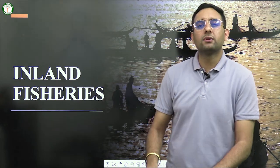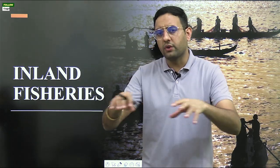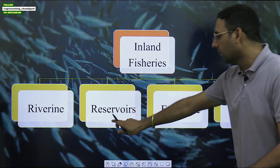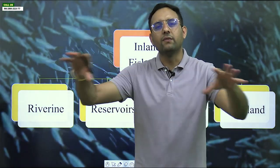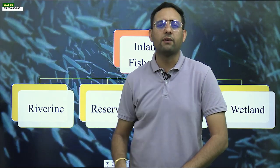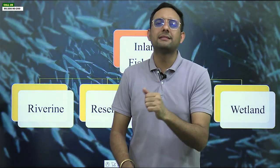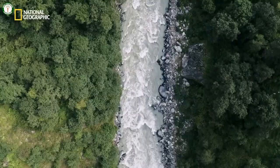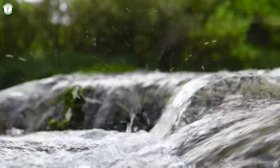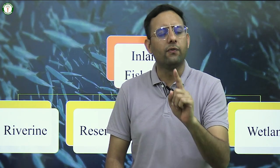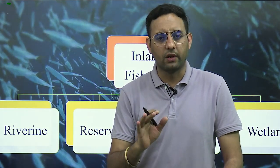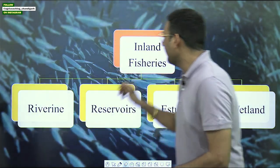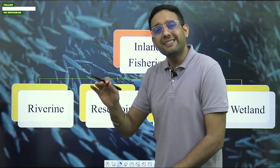Now we discuss types of inland fisheries. First is riverine — the entire river system of India, including perennial rivers that have water throughout the year like the Ganga, and seasonal rivers that have water only during the monsoon season. All river systems are considered riverine, and they are part of inland fisheries because rivers are found within the land.